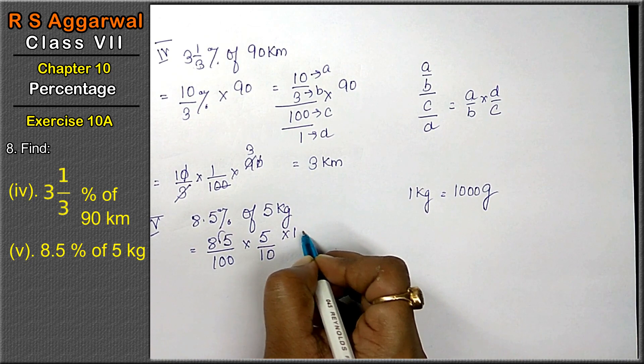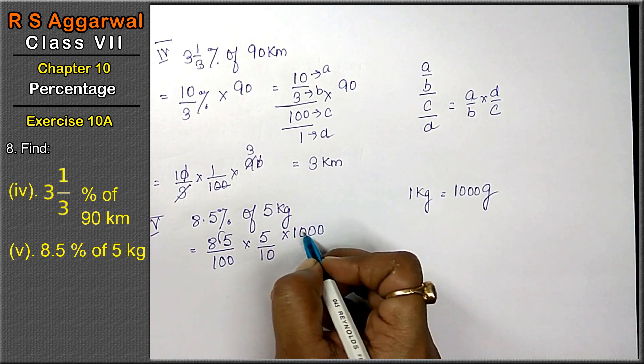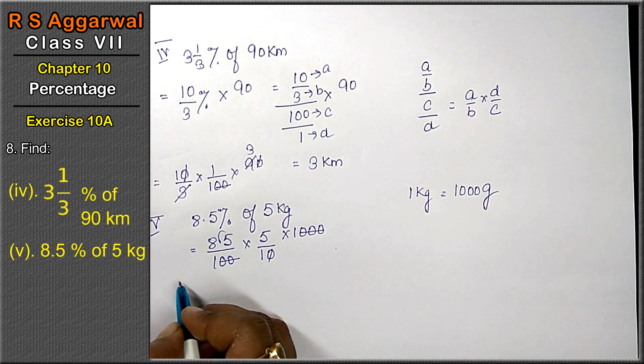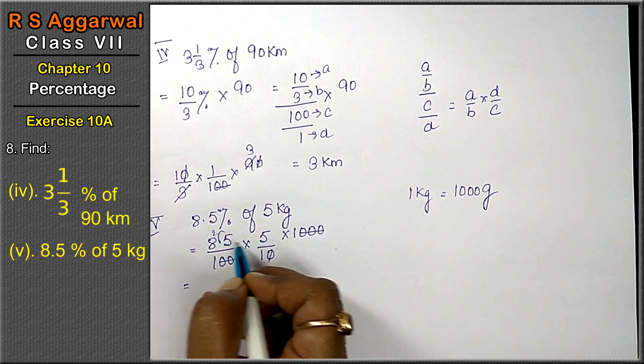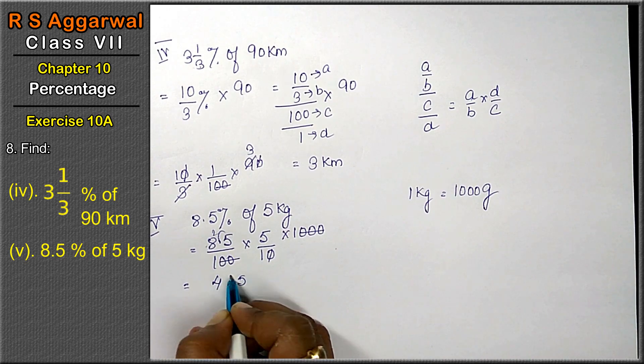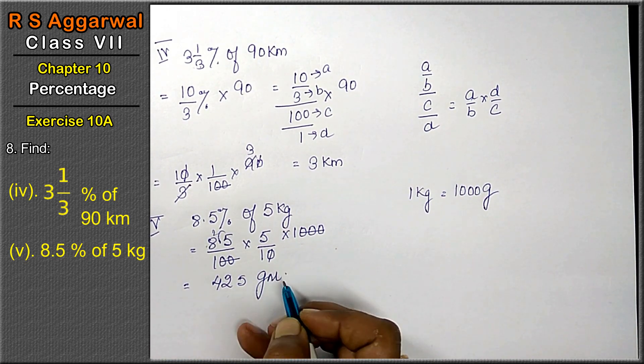If we change to grams, multiply by 1000. These three zeros will cancel. 5 fives are 25, 5 eights are 40 plus 2 is 42. The answer is 42 grams.